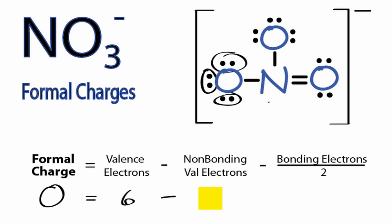These ones right here, we have 2, 4, 6 of those. And then bonding valence electrons, we have one bond right here. That's 2 valence electrons, but we'll divide that by 2 as shown in the equation.